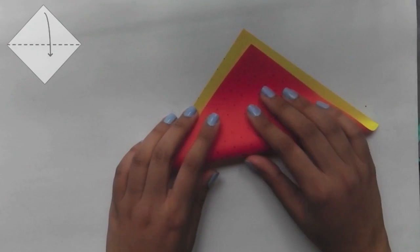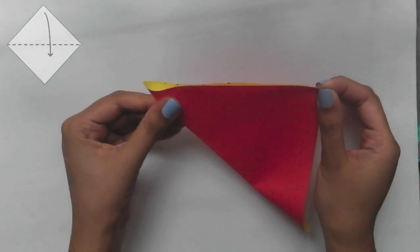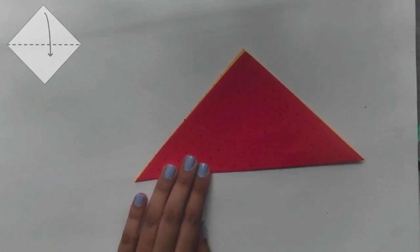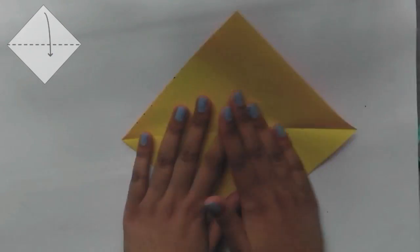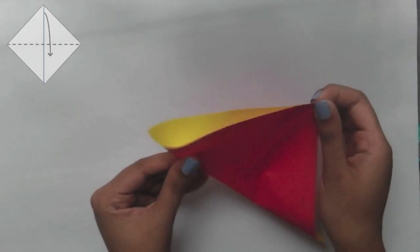Start off by folding your paper from one corner to the other. And then do the same with the other two corners, you should have a cross crease mark.